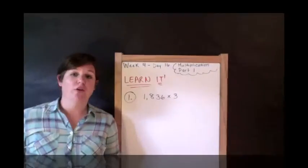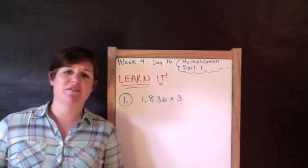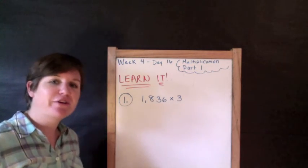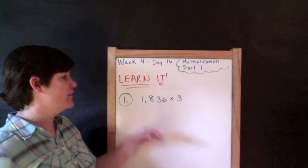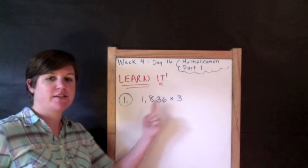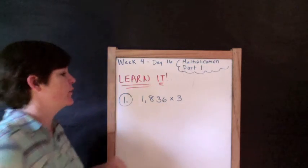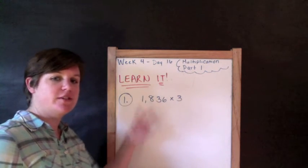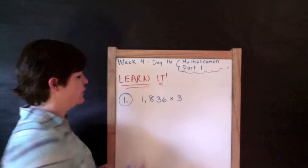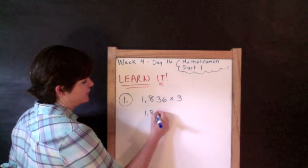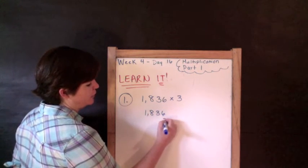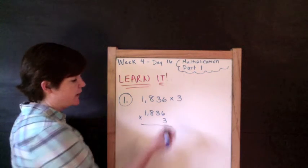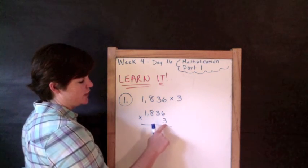So we're going to go ahead and take these notes and get to our first problem. Let's go. All right, here we go with the learn it section. We've got problem number one: 1,836 times 3. As you can see, we're doing four digits times one. That's what you do in fourth grade - you do up to four times one or two digits times two digits. So first of all, I'm going to go ahead and rewrite this so that it is lined up vertically. You put 3 right under in the correct place, in the ones place, under the 6.